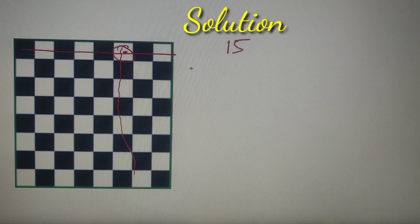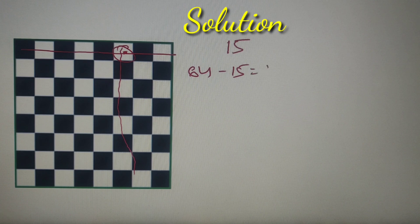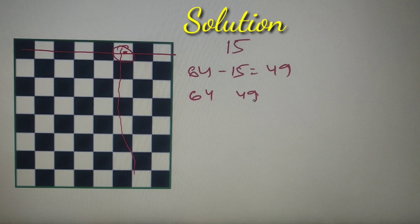So if I place only one rook on a chessboard there are 64 ways. Now if I have to place another rook on this chessboard I can do it in 64 minus 15, that is 49 ways. So the first rook can be placed in 64 ways. The second rook can be placed in 49 ways.